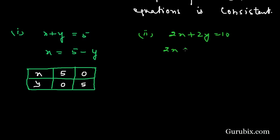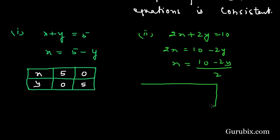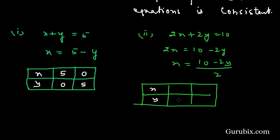For the second equation, 2x plus 2y equals to 10, we write x equals (10 minus 2y) over 2. We draw a table with x and y values.